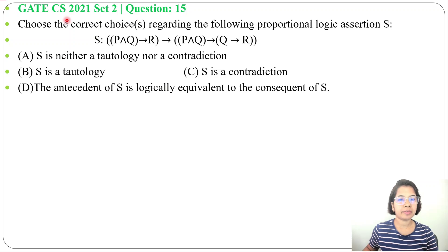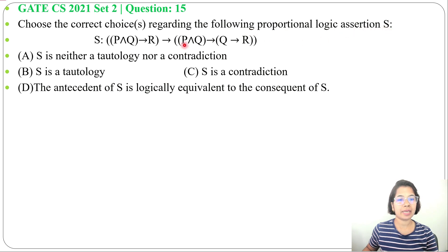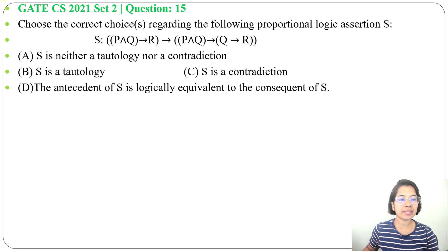Let's solve one previous question of mathematical logic. This question was asked in GATE CS 2021 set 2, question number 15. Choose the correct choice regarding the following propositional logic assertion S. Here (P∧Q)→R, whole implies P∧Q→(Q→R), and four options are given asking about tautology or contradiction and the antecedent and consequent of S.